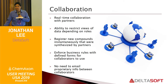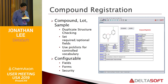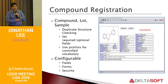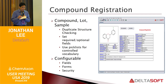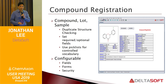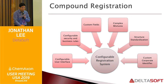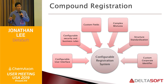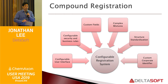Compound registration out of the box comes with a three-level compound/lot/sample hierarchy. One thing to note is that duplicate structure checking is a feature coming from JChem cartridge. It's configurable for whatever data needs you have within the organization, within departments, or with external partners. There's also structure standardization, so all structures coming in get run through one standardization process using ChemAxon's Standardizer features.